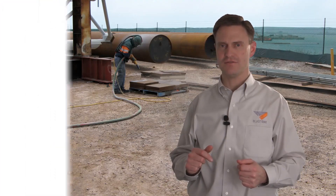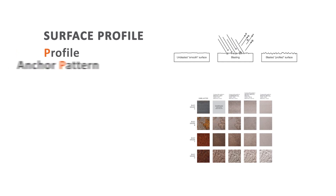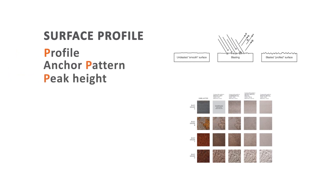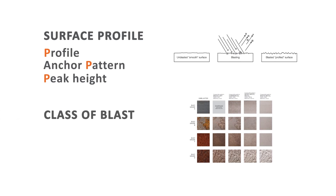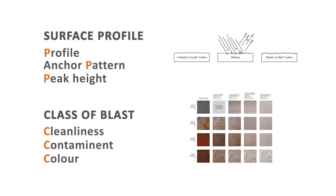Here's how you can remember the difference. P stands for profile and peak height, while C stands for class of blast, cleanliness, contaminant, and colour.